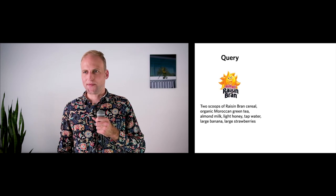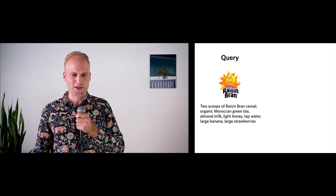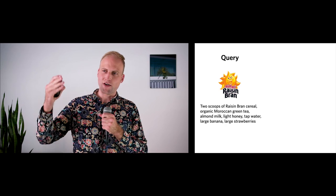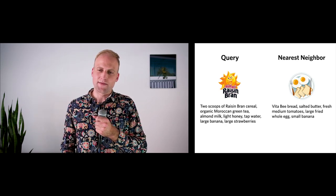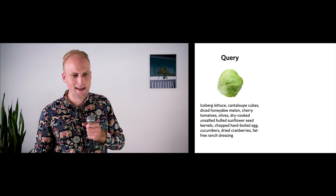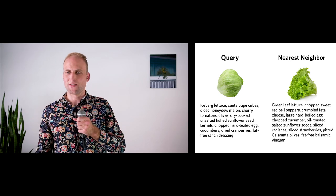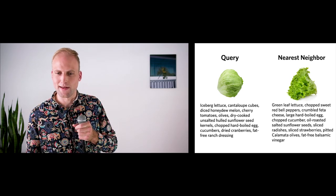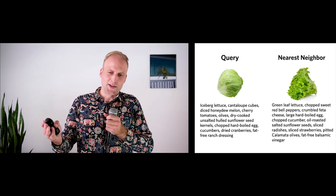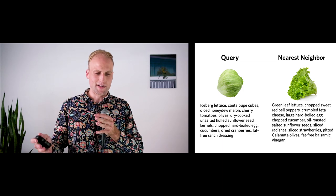Can we get qualitative results from this model trained to maximize recall? We can look at nearest neighbors in embedding space. A query breakfast meal with green tea and large banana and strawberries has its nearest neighbor as another breakfast meal with large fried whole egg. A salad based on iceberg lettuce with dry-cooked unsalted hulled sunflower seed kernels has its nearest neighbor as a green leaf lettuce-based salad with oil-roasted salted sunflower seeds. Even though we built this model for performance, we can use it to understand patterns in the data.